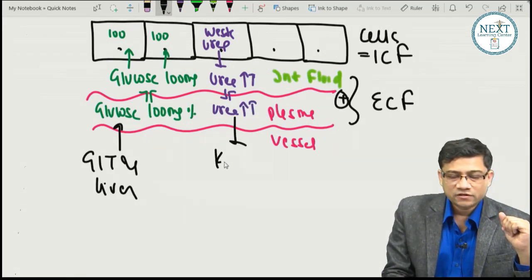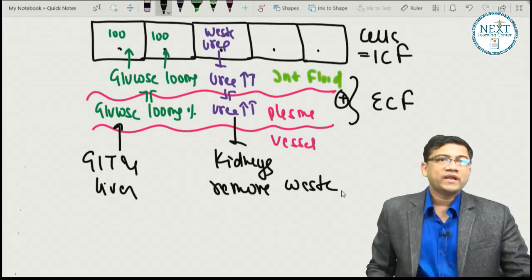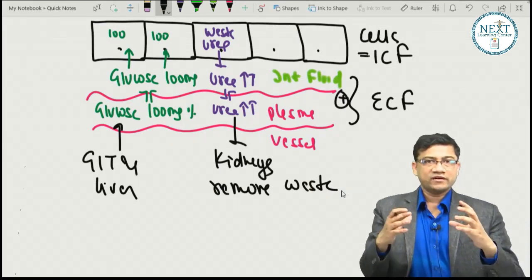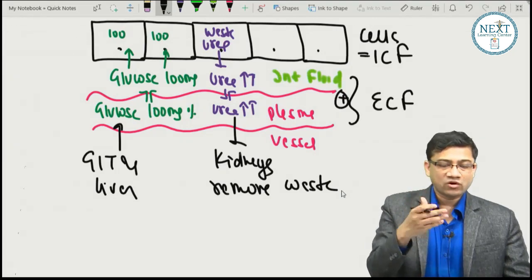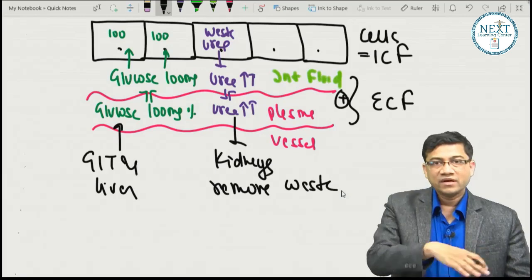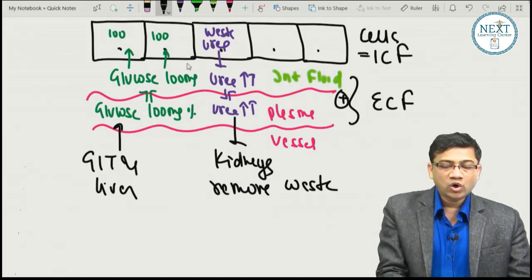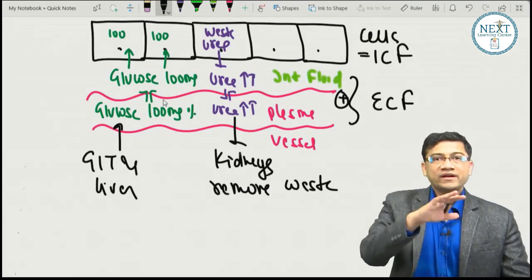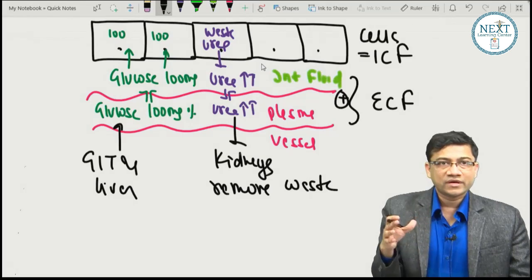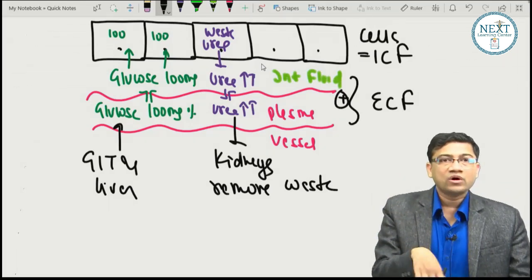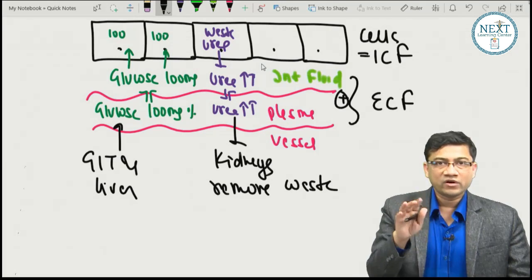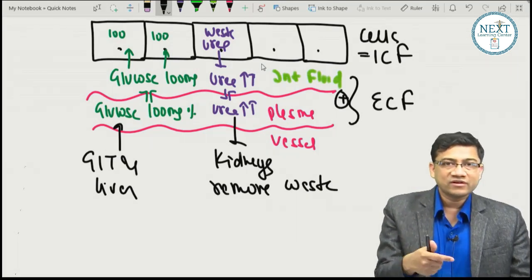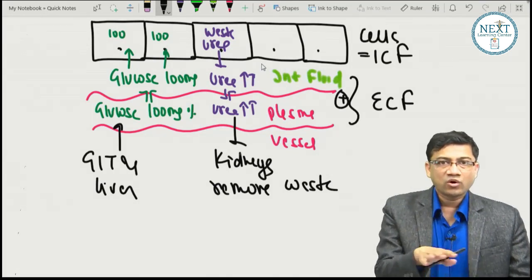The kidneys remove urea and other waste. So kidney cells and GIT cells are not directly connected, but through the interstitial fluid they are connected. The GIT and liver continuously add nutrients like amino acids and glucose to the plasma, and the heart pumps them to the whole body, so all cells receive glucose from their interstitium and all metabolic waste is removed by the kidneys.